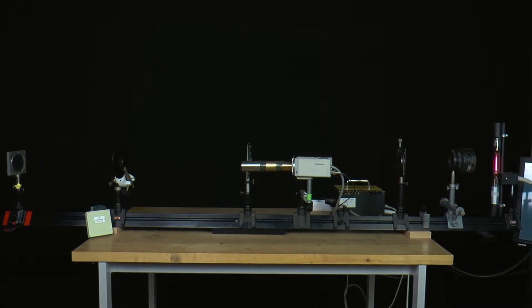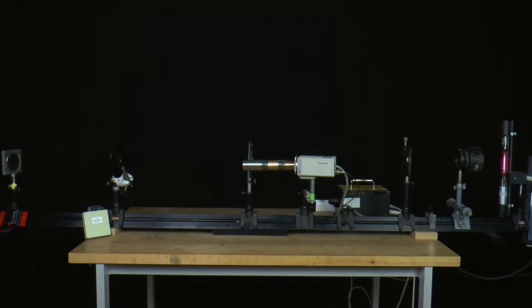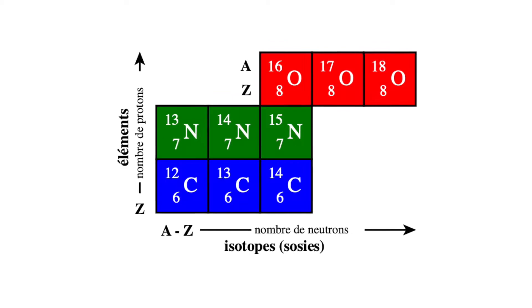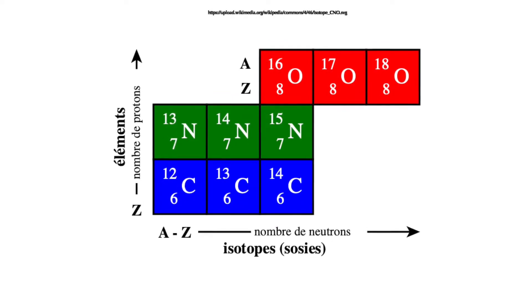The isotope effect generally refers to small differences in the physical behavior of individual isotopes of an element. Isotopes of an element contain the same number of protons and electrons but differ in their number of neutrons.